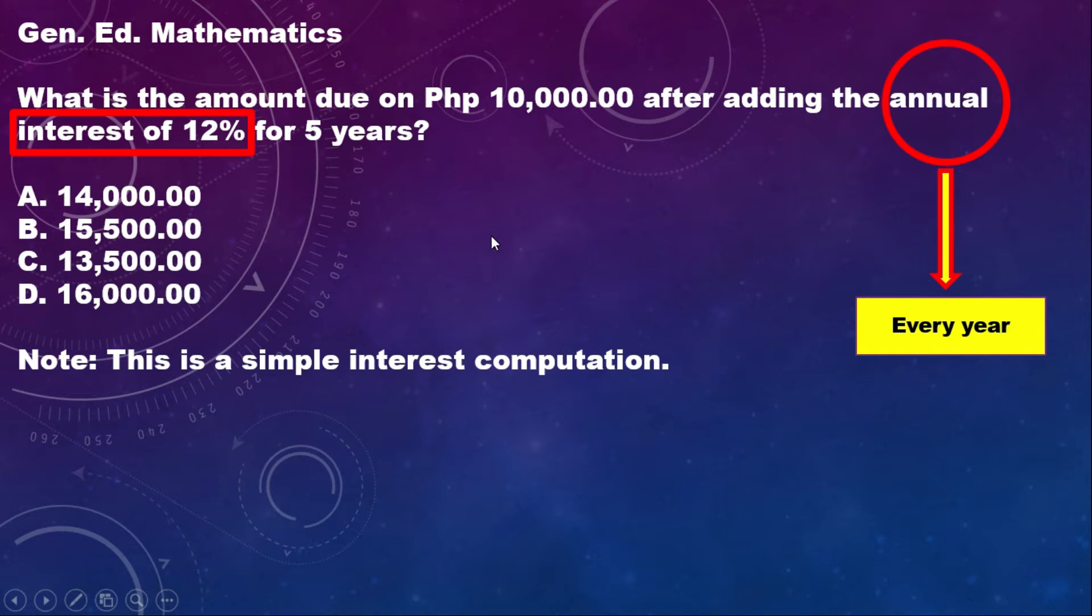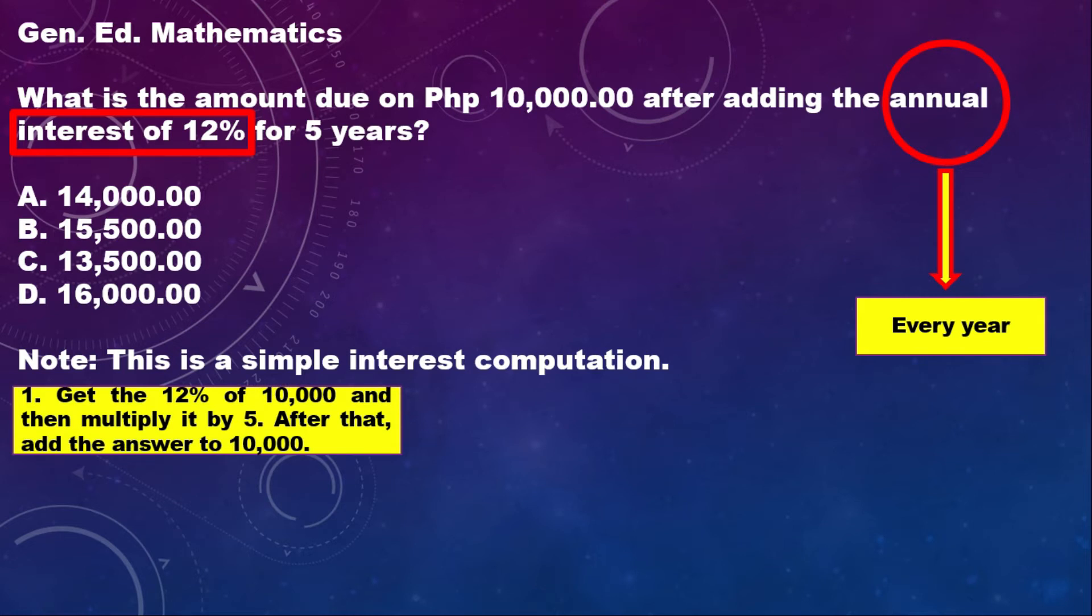Though I am not a mathematics major teacher, I have my ways of answering questions. For this question, I can answer in two ways. The first one is: I will get first the 12% of 10,000, that is the one year or annual interest. After that, I will multiply it by 5 because it's 5 years. Then I'll add the answer to 10,000, and that is the final answer.